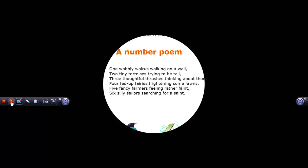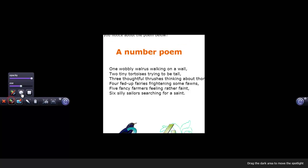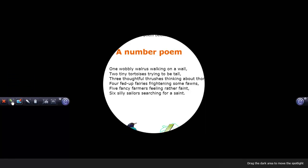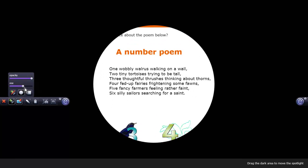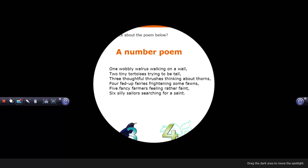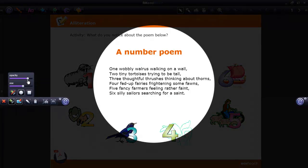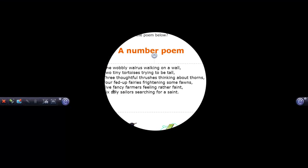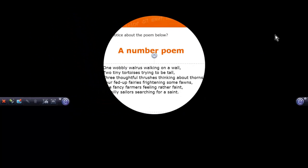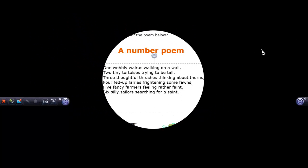Going back to the spotlight mode, we have two choices of spotlight: either a square-shaped or a circle-shaped. We can control the size of the spotlight, and we can also control the opacity of the background. The spotlight has two zones — a light zone and a dark zone. To move the spotlight, you can be anywhere in the dark zone and then click and drag to move the spotlight to the area of your choice.